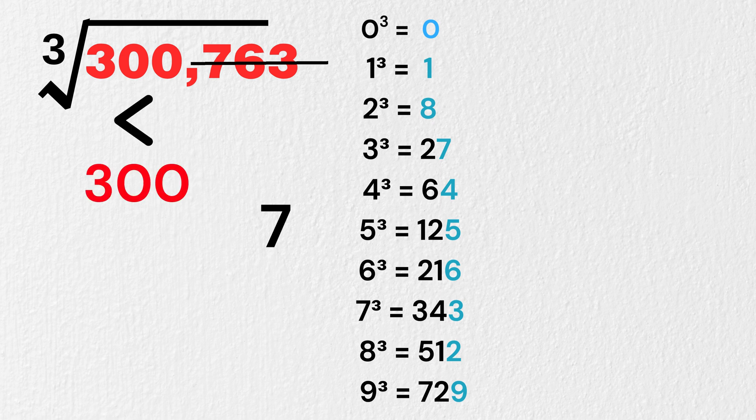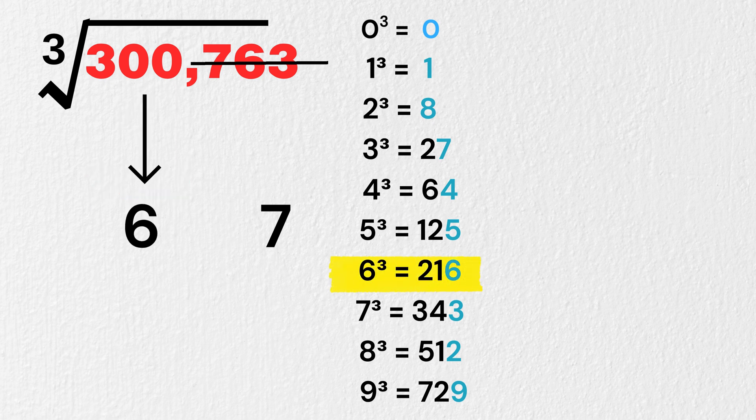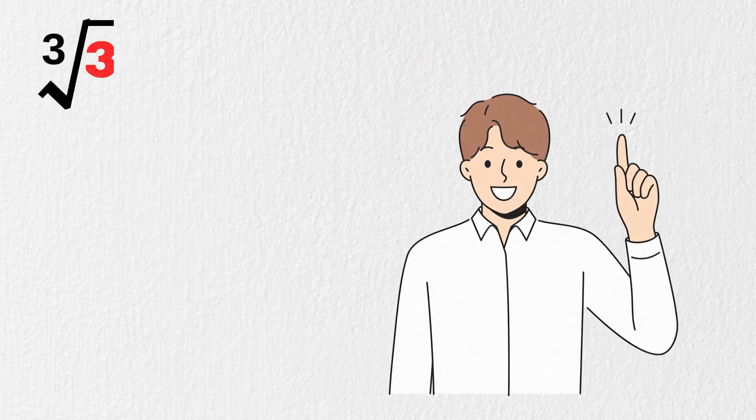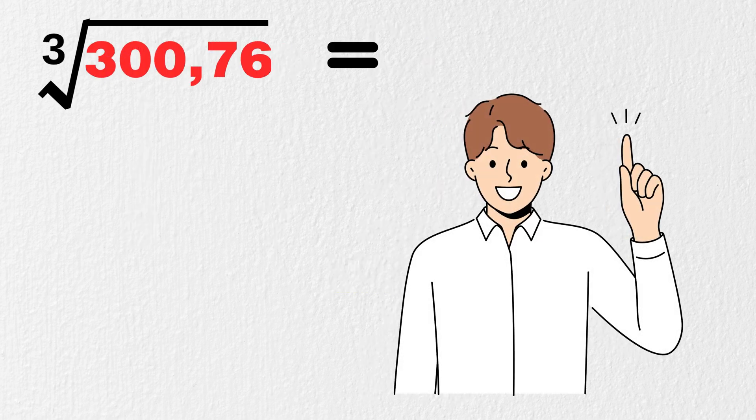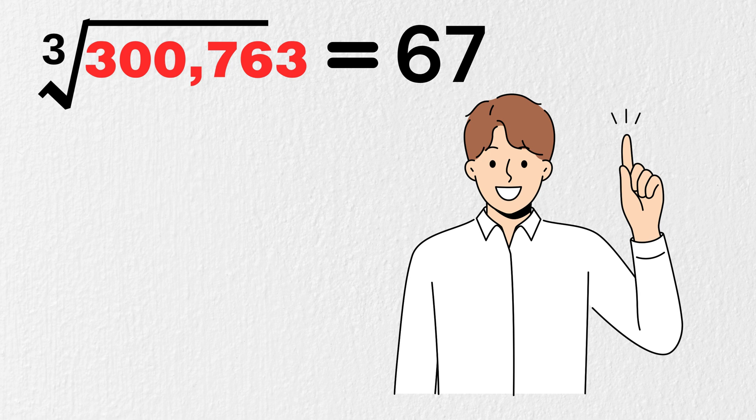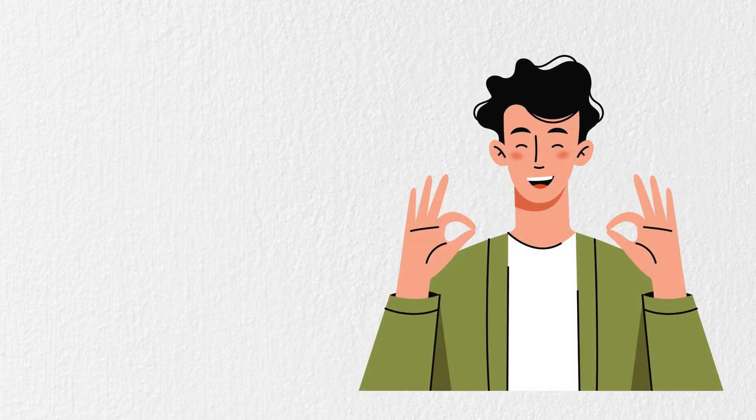Finally, we want a cube which is just less than or equal to 300. That is number 216, which is 6 cubed. So, we write 6 here. Our answer is cube root of 300,763 is 67. We nailed it!